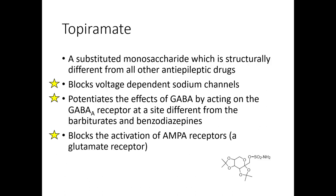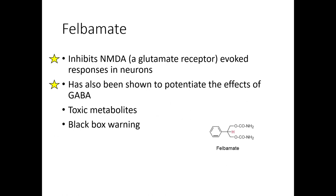Topiramate blocks voltage-dependent sodium channels — you can see this topic is strongly tied to sodium channels. On top of sodium channel blocking, topiramate also appears to enhance GABA effects by binding at a site different from where barbiturates or benzodiazepines bind. It also blocks glutamate receptors, stopping some of the excitatory action potential side of the story.